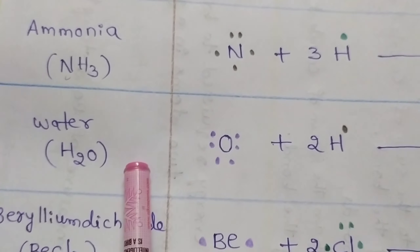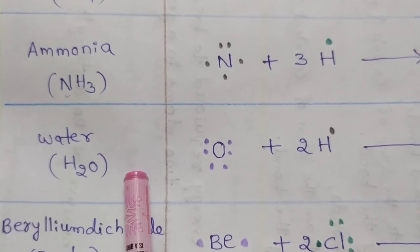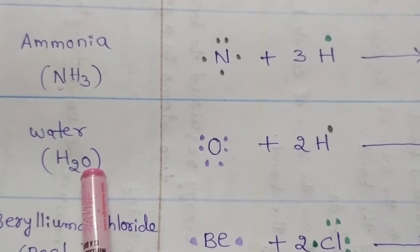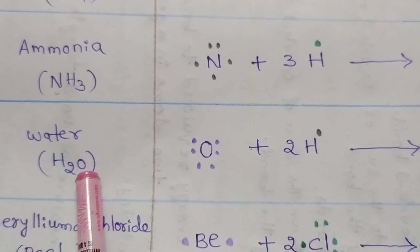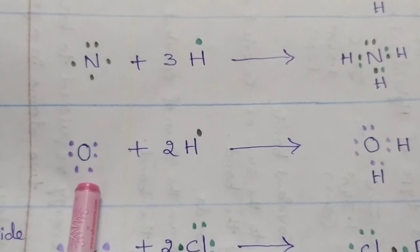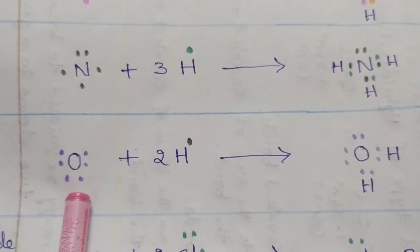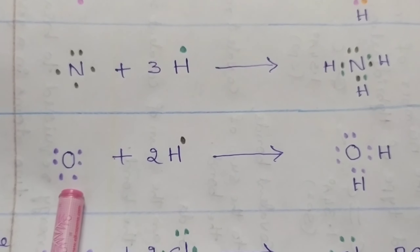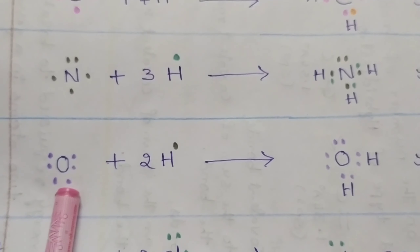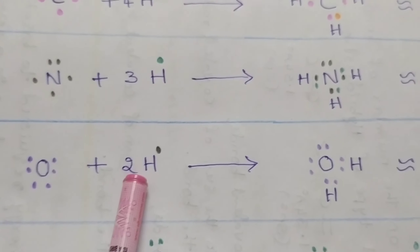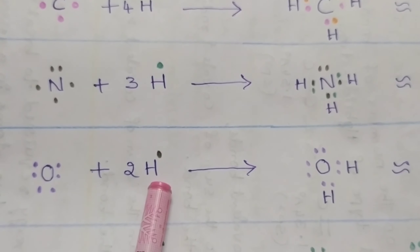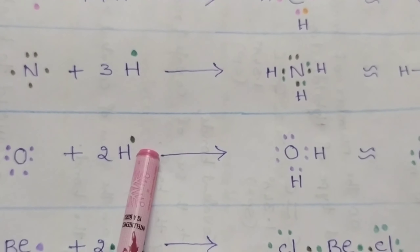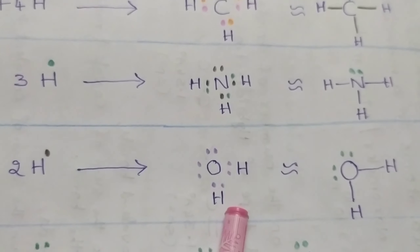Now we discuss the shape of the water molecule and its Lewis structure. In the water molecule, the central atom is oxygen. The oxygen atom contains six valence electrons. In order to get octet configuration, this oxygen reacts with two hydrogen atoms, which each contain one valence electron, and forms a water molecule.